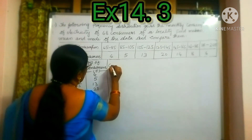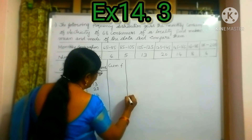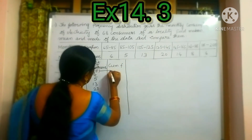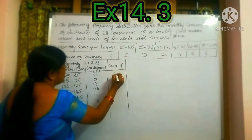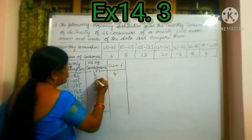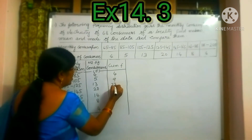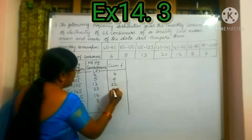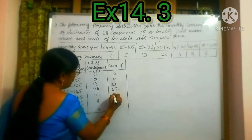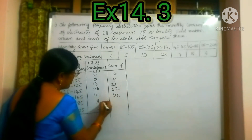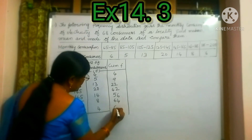We have to take the cumulative frequency to find the median; we have to calculate cumulative frequency. We write the first value as it is, and add each subsequent one: 4, then 4 plus 5 is 9, 9 plus 13 is 22, 22 plus 20 is 42, 42 plus 14 is 56, 56 plus 8 is 64, 64 plus 4 is 68.